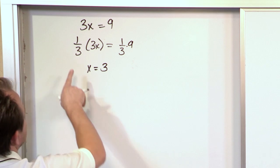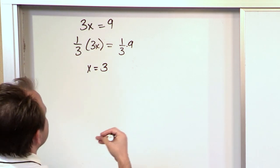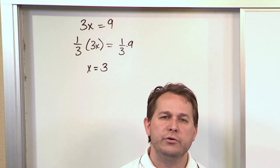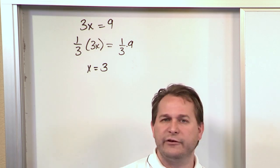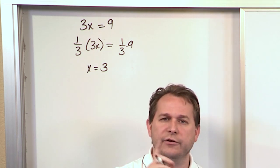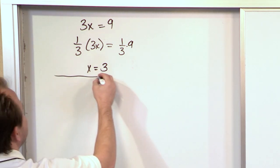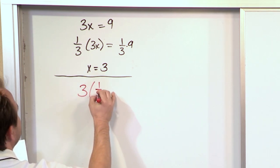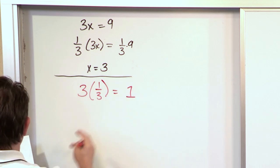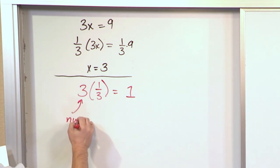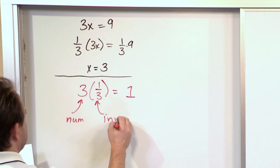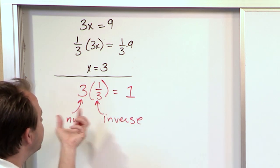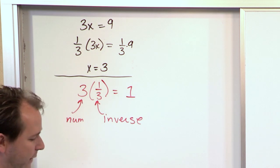What you may not realize is that the number one third is called the multiplicative inverse of the number three. So if you're given a number you can find the inverse of that number, which in this case is just one over the number, such that when you multiply them together you get the number one. That's the definition of an inverse in general. I take the number three, multiply it by one third, and I get the number one. The inverse is whatever number, when multiplied by the original, gives you one.